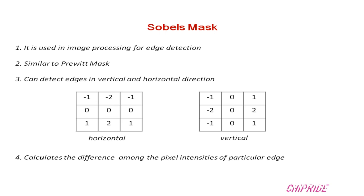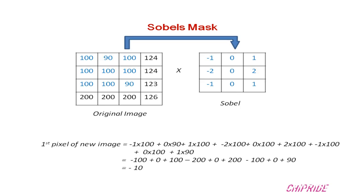It calculates the difference among the pixel intensity of a particular edge. Next we will see how the Sobel's mask is applied. Consider this as an original image — we will select the first pixel here. We have 100, just below 19, that is going to be your first pixel, the center pixel, and here we have zero as the center pixel in Sobel's mask.